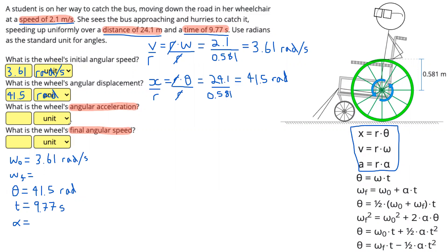Those are our three known variables. The question wants us to find the angular acceleration and the final angular speed. Let's find the angular acceleration first — that's our question mark — and for now the final angular speed is our unknown. We want the equation that doesn't have final angular velocity, which is going to be: theta equals omega-zero times t plus half alpha t-squared.